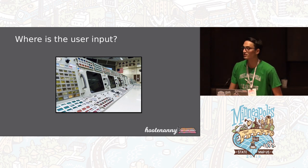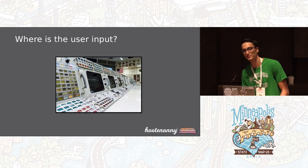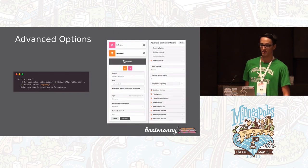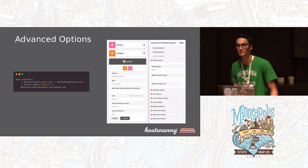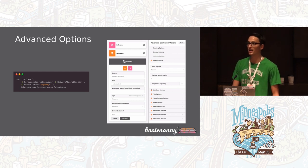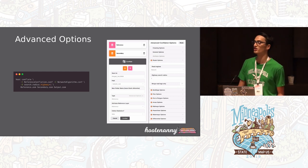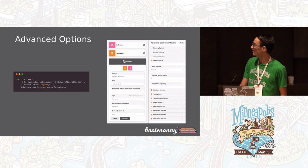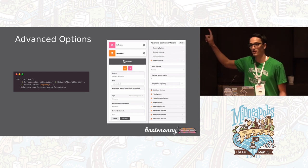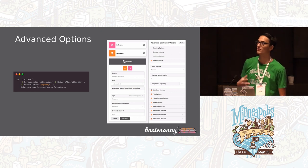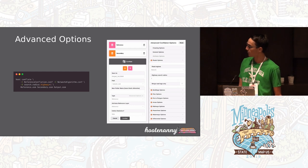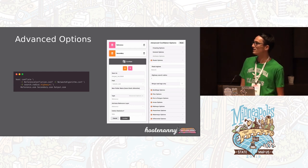How can you access these options in the web interface? We have advanced options — a curated list of command line options exposed in a GUI. In this example of a reference conflation, you can see road-related conflation options: I'm using the network algorithm with a search radius of one when matching highways. On the left-hand side, you can see what that would look like on the command line.